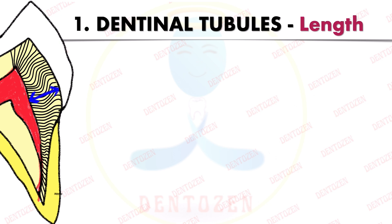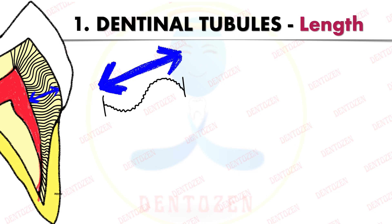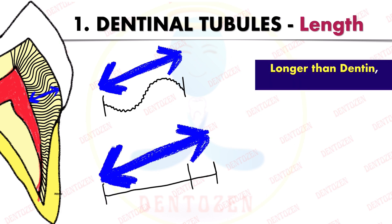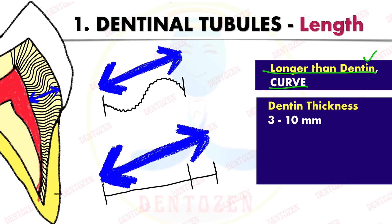The length of the dentinal tubule appears to be the same as the thickness of dentine, but it is not. If we straighten out the dentinal tubule, its length becomes more than the thickness of dentine. So we can say dentinal tubules are longer than the dentine thickness because they are curved.